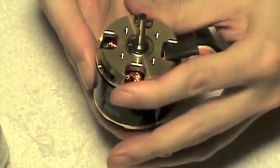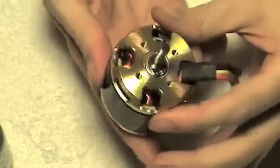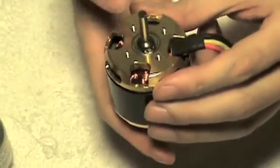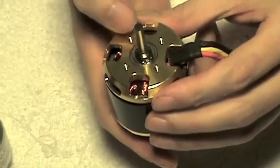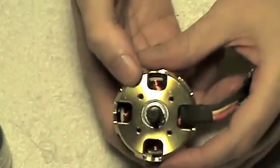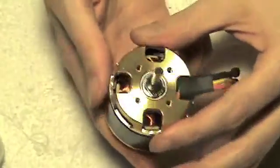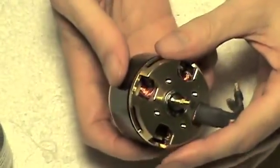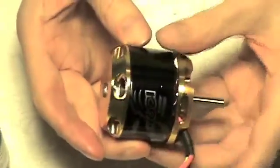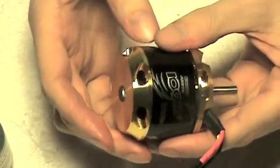This one came nice and lubricated when it arrived, but it doesn't hurt to add a little more to it. If you keep the stock bearings inside of these motors, it's a good idea to lubricate them every five to ten flights. Especially for helicopter Scorpion motors, because the bearings tend to go bad otherwise if you don't.